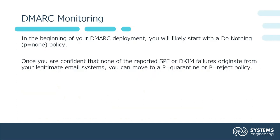In the beginning of your DMARC deployment, you will likely start with a do-nothing or P-equals-none policy. Once you are confident that none of the reported SPF or DKIM failures originate from your legitimate email systems, you can move to a P-equals-quarantine or P-equals-reject policy.